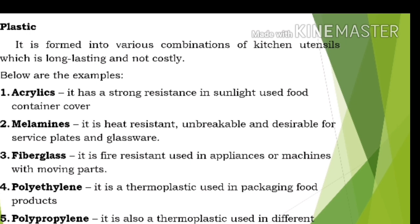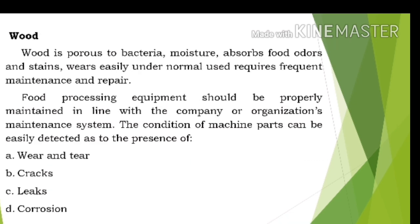Types of plastics: Acrylics have strong resistance to sunlight and are used for food container covers. Melamines are heat-resistant, unbreakable, and used for service plates and glassware. Fiberglass is fire-resistant and used in appliances or machines with moving parts. Polyethylene is a thermoplastic used in packaging food products. Polypropylene is also a thermoplastic used in different applications like dishwashing racks. Wood is porous to bacteria and moisture, absorbs food odors and stains, wears easily under normal use, and requires frequent maintenance and repair.